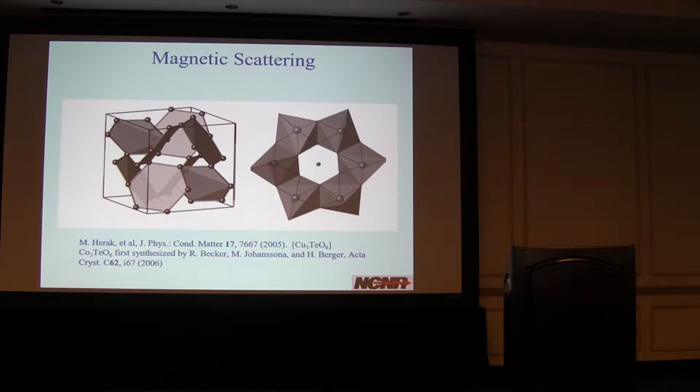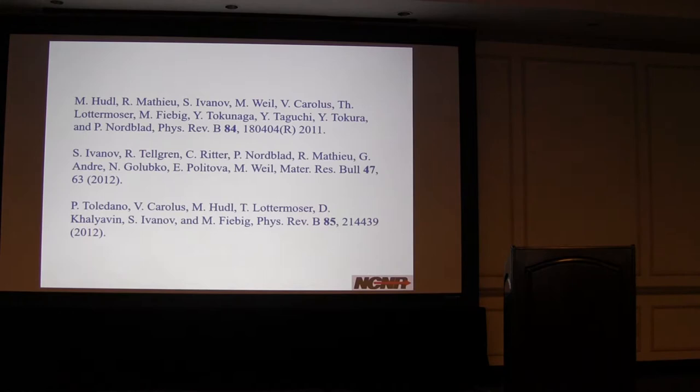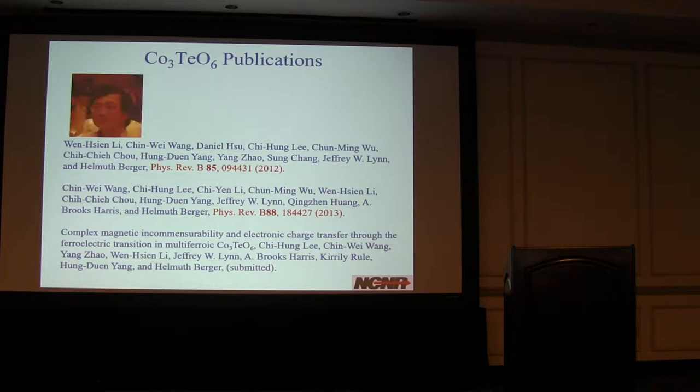This is a fairly young material, as materials go. I don't know if it's in the molecular foundry database, but it looks pretty simple. Here's a tellurium atom, and here are these kind of distorted octahedra of cobalt surrounded by oxygen. A number of other groups have worked on these materials, doing powder diffraction and some second harmonic generation measurements.